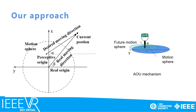The above mapping is just the traditional rate-based control with a hovering mechanism, so the self-centering problem is still there. As shown in the figure, in some cases the user may move to the perceptive origin and treat it as the real origin. Then, when the user moves from the current position, the real moving direction will be different from the desired moving direction.